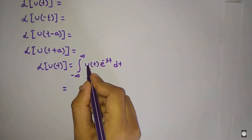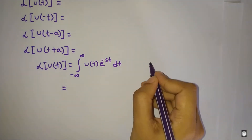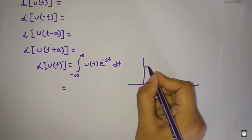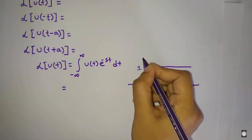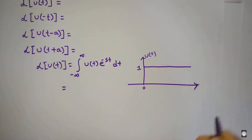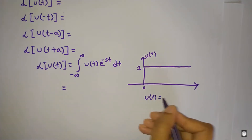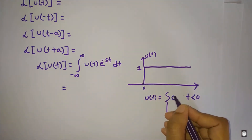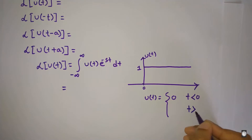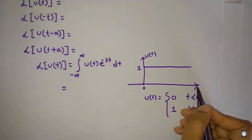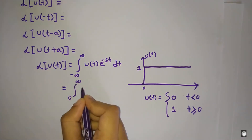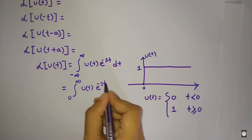The first step function u of t is the unit step function. U of t will be defined as follows. We will start the unit step function. The Laplace transform of u of t is equal to the integral from 0 to infinity of u of t times e to the power minus st dt.